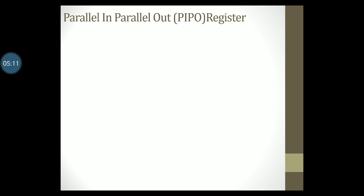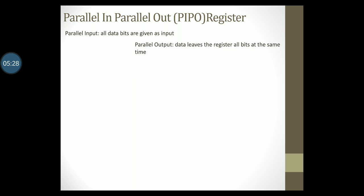Let us study the working of a parallel in parallel out register, or PIPO. In this shift register, all the data bits are given to the input at the same time — that is parallel input — and the data output is in parallel form, meaning all the bits are made available at the output at the same time.